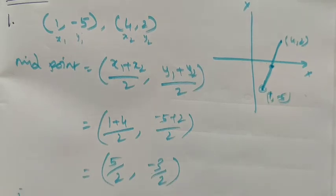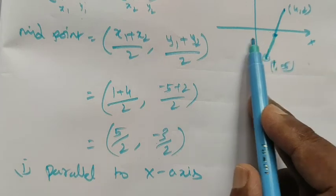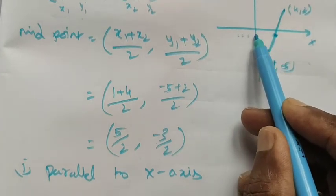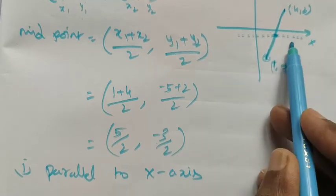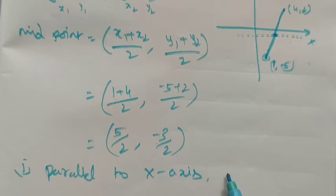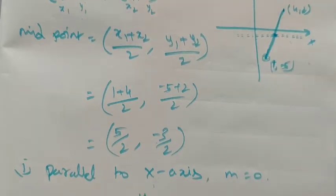First, we want to find the line parallel to the x-axis passing through the midpoint. A line parallel to the x-axis has slope m equal to 0. The formula for such a line is y = b.